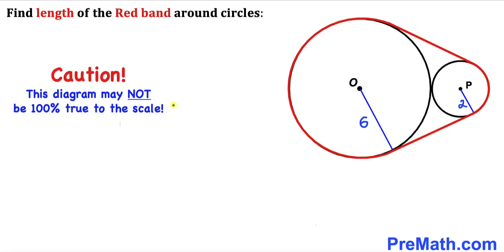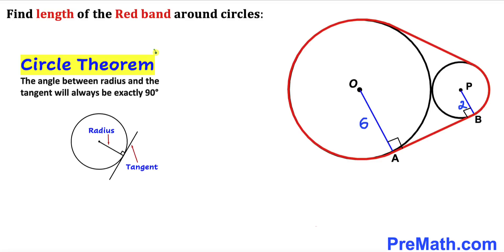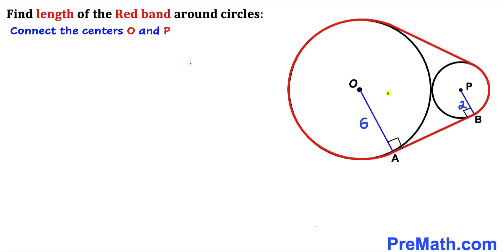Note that this figure may not be 100% true to scale. Let's get started with the solution and recall the circle theorem. According to this theorem, the angle between the radius and the tangent line will always be 90 degrees. Here, this is our tangent line and these are our radii, so these angles have got to be 90 degrees each.